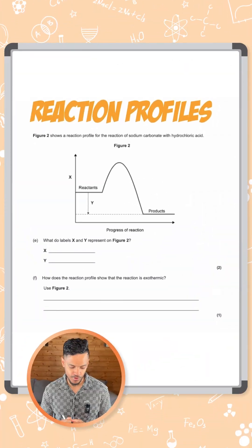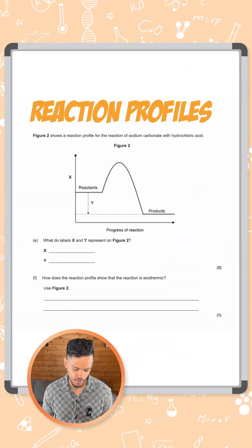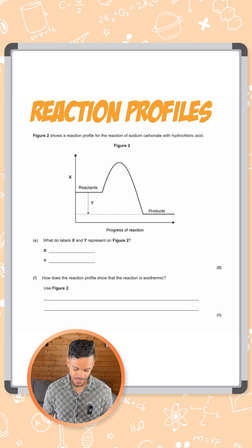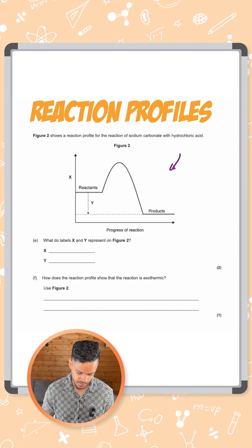What we have here is a reaction profile. It says figure two shows a reaction profile for the reaction of sodium carbonate with hydrochloric acid. And here we go. This is our diagram.